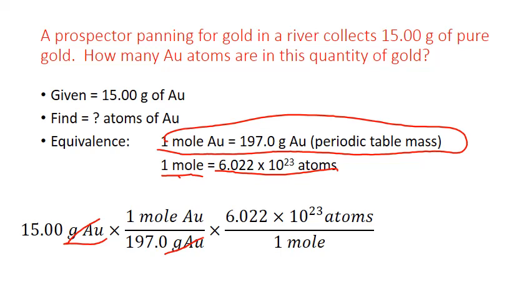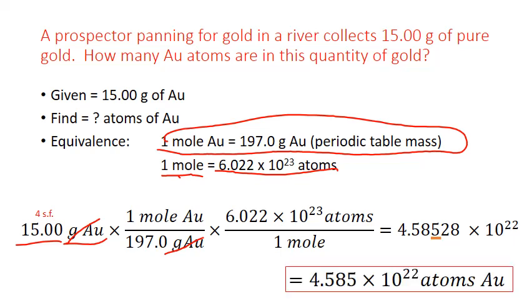And now we multiply through by everything on top, divide by everything on the bottom. And we get 4.58528 times 10 to the 22nd as our number. We still need to round to an appropriate decimal place. But again, we go back to the original measurement, our 15 grams, count the number of significant figures. There's four significant figures here. And that means we have to round to four significant figures for our final answer. So 4.5852 rounds down to 4.585 times 10 to the 22nd atoms of gold.